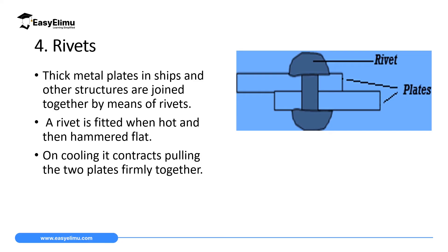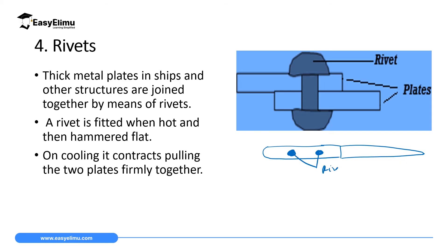The fourth application of expansion and contraction in solids is in rivets. You are likely familiar with them — if you take a knife at home, at the knife handle we have two shiny metallic points. These are what we call rivets.